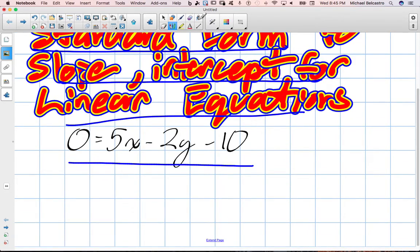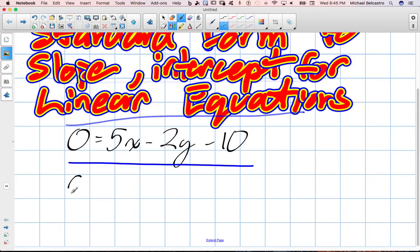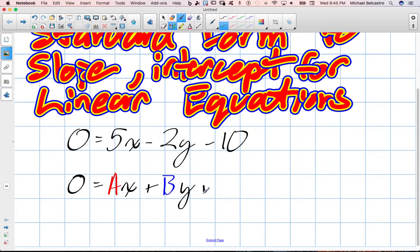I'm currently in the standard form. And the parent function of the standard form is usually written like this: 0 is equal to ax, a being the coefficient in front of x, plus by, b being the coefficient in front of y, and then plus the letter c, c being the constant value.